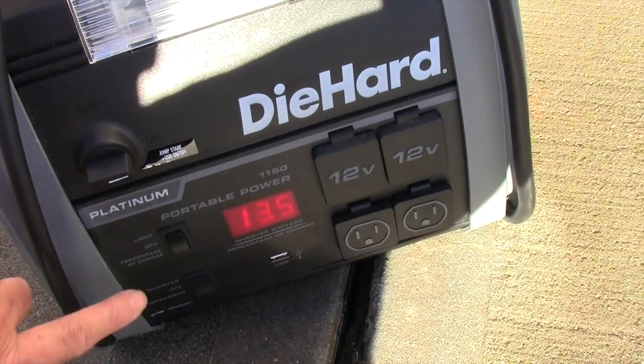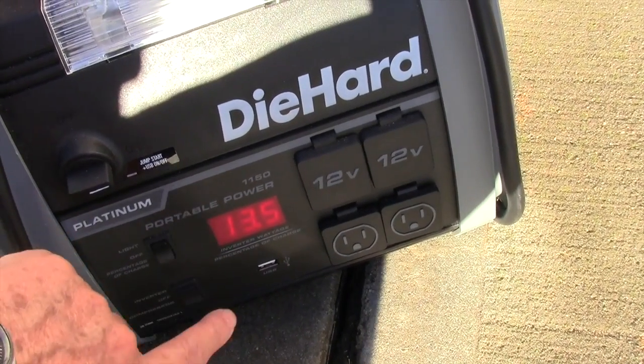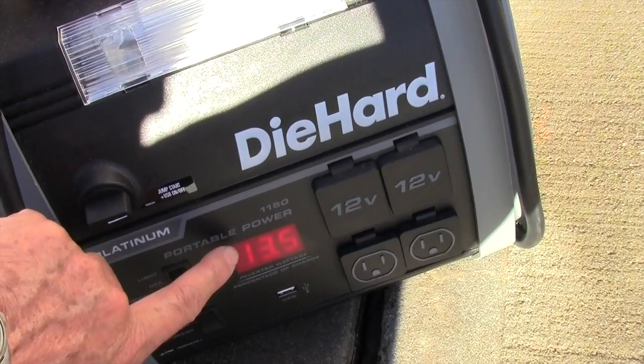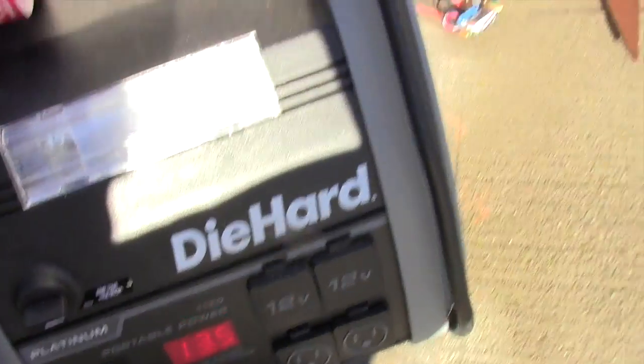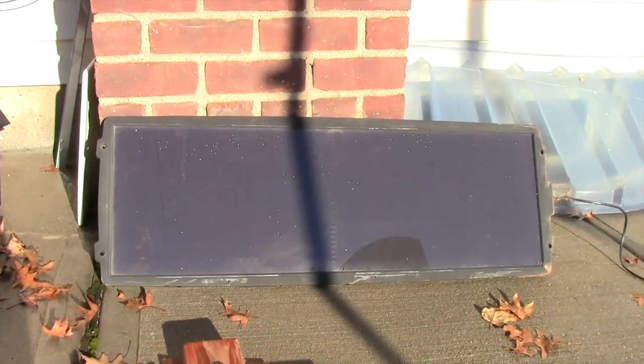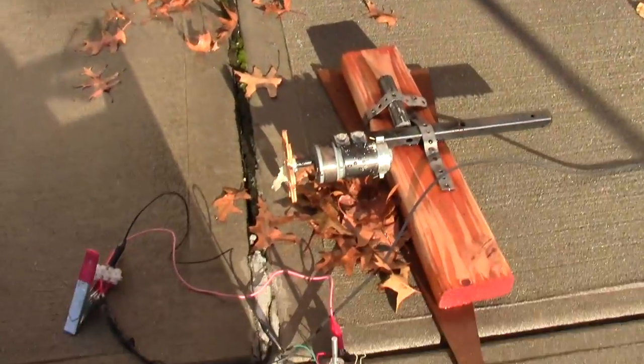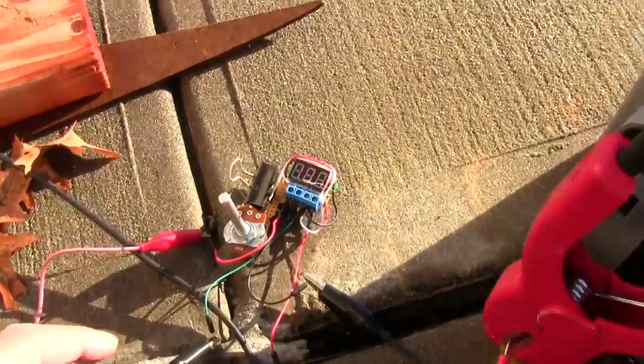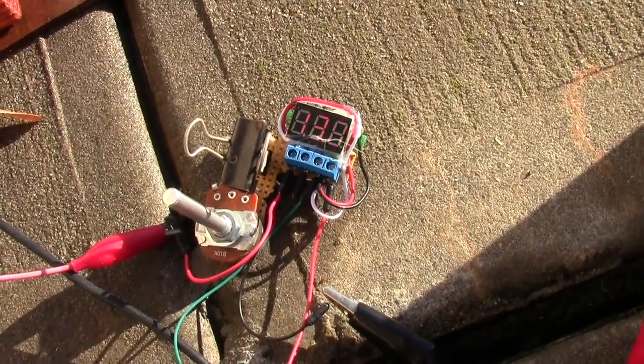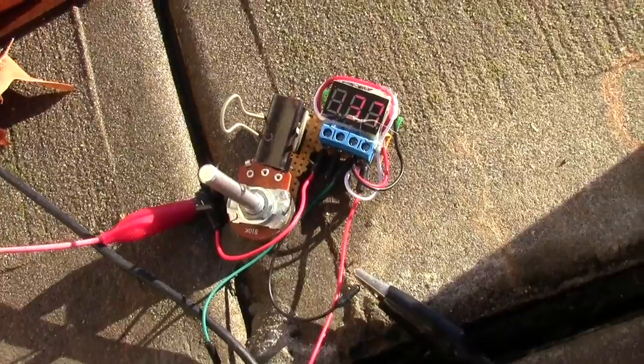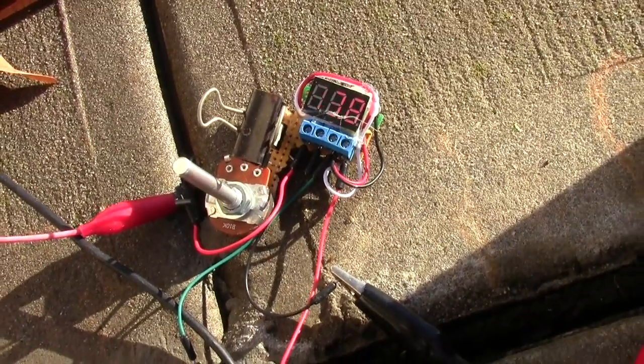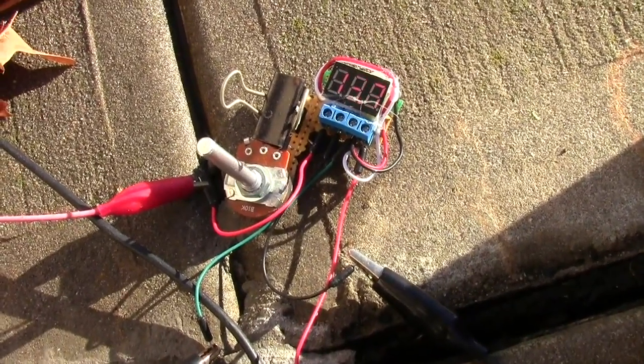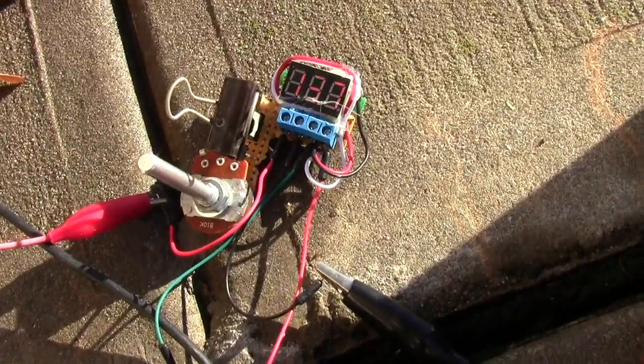Instead of plugging this jump hook battery into the wall using AC power, I'm charging it with this 15 watt solar panel and I am using a charge regulator that I put together with an LM317 adjustable voltage regulator.